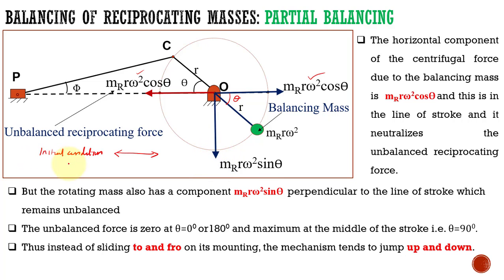This vertical unbalanced force causes the system to vibrate up and down. So after balancing, the system tends to jump up and down, which is more dangerous. So instead of sliding to and fro, it is now moving in the up and down direction.